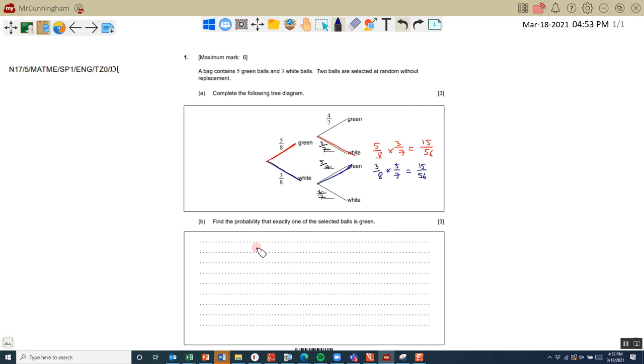To work out the probability, we add the probabilities together because it's either this or this will happen. We have 15/56 plus 15/56, which equals 30/56. That simplifies by dividing top and bottom by 2 to get 15/28. Question one complete.